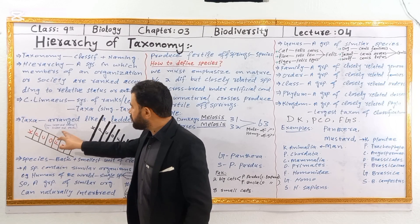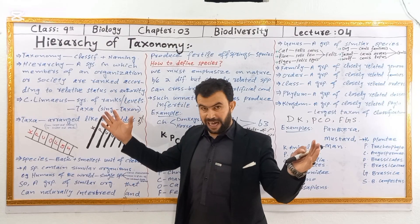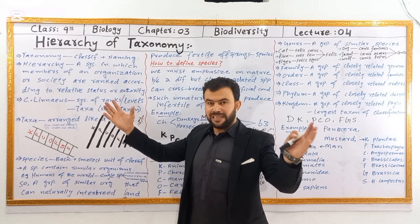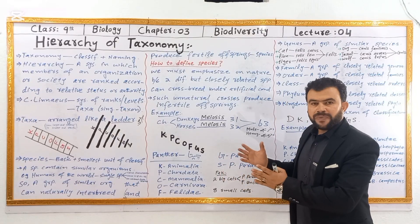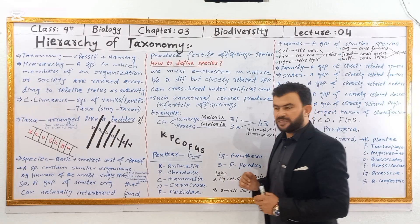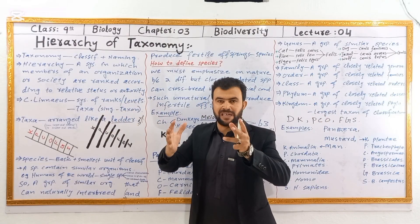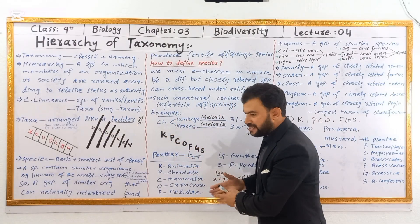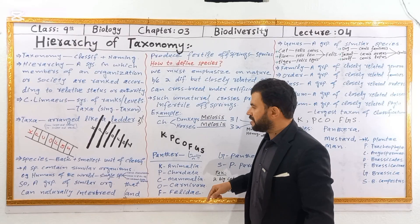Taxonomic classification goes from larger and general to smaller and specific. The general categories are broad, and the specific categories are very specific. This is the general-to-specific concept in taxonomy.